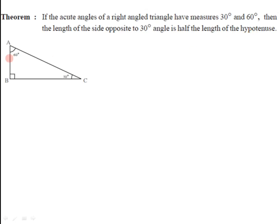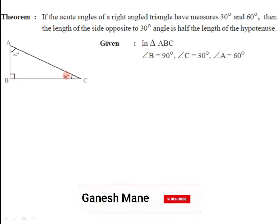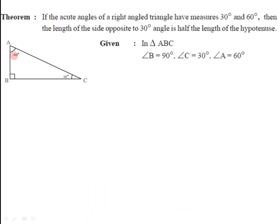To prove this we need a diagram. Let us have a triangle ABC which is a right angle triangle where angle B is equal to 90 degree, and it is given that measure of angle C is 30 degree and measure of angle A is 60 degree. So that's given. The measures of angles of triangle ABC are 30 degree, 60 degree, and 90 degree. We have to prove that the length of the side opposite to 30 degree is half of the length of the hypotenuse.